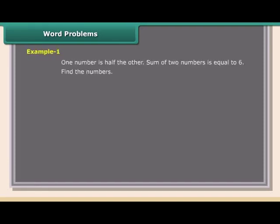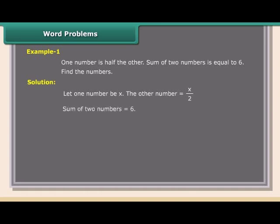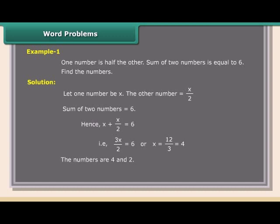Word problems — Example 1: One number is half the other. The sum of two numbers is 6. Find the numbers. Solution: Let one number be x; the other number is x/2. x + x/2 = 6; 3x/2 = 6; x = 12/3 = 4. The numbers are 4 and 2. Check: 4 + 2 = 6. ✓